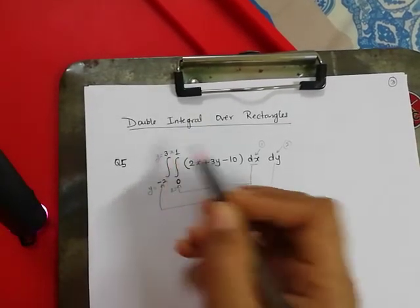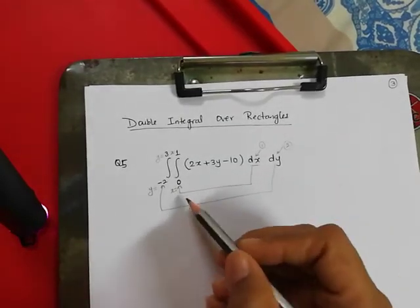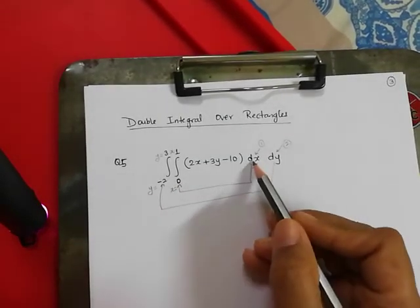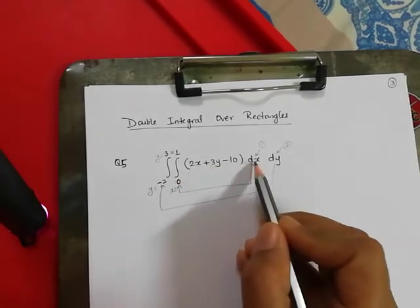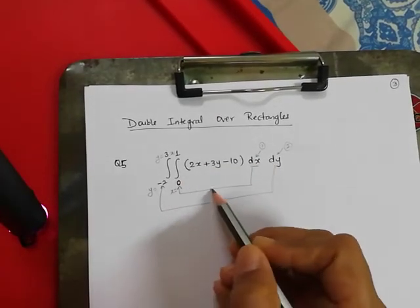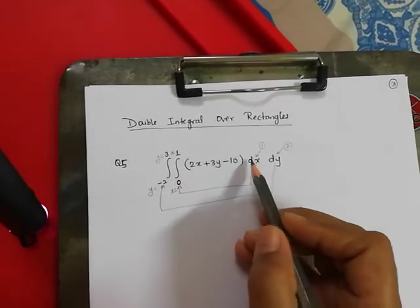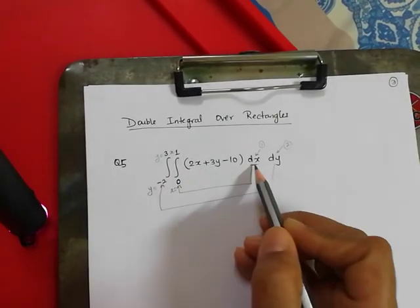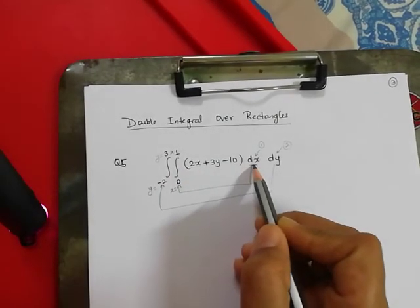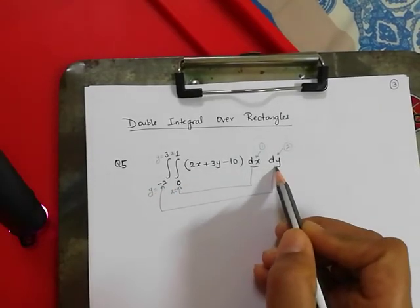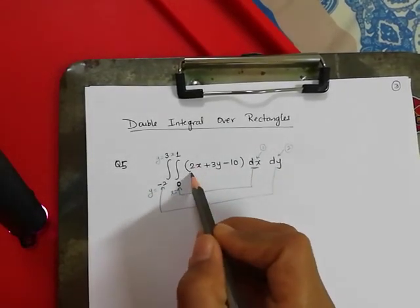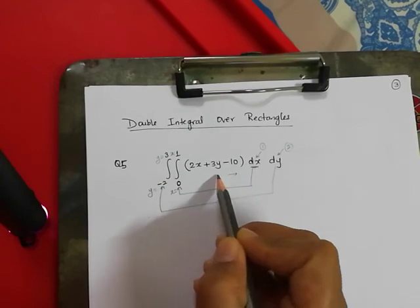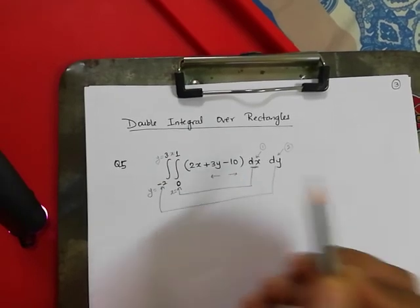To remember this: when we draw a line between the limits and the dx dy notation, it should not intersect. The inner limits are for the inner variable, and the outer limits are for the outer variable. So the function is integrated from inside moving outward.